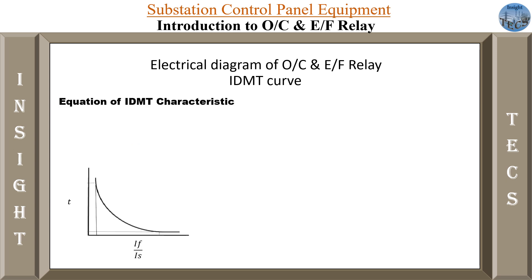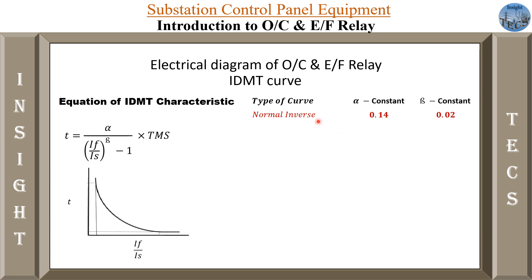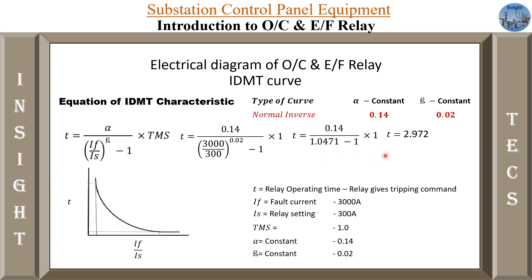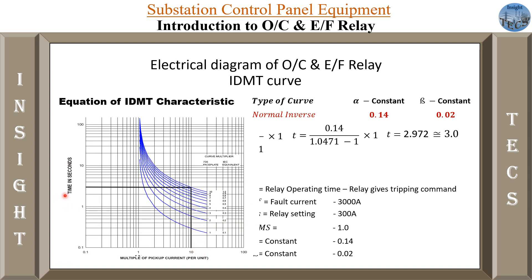Let us try to plot one example with the alpha and beta values for normal inverse. These are the values from our previous example: fault current is 3000 amperes, relay setting is 300 amperes, and TMS is 1. Doing the calculation, this gives approximately T equal to 2.9 seconds, which we assume as approximately 3 seconds. The plug setting multiplier is 3000 divided by 300, which is 10. We know from the curve that when plug setting multiplier is 10, the time taken for relay operation is 3 seconds.